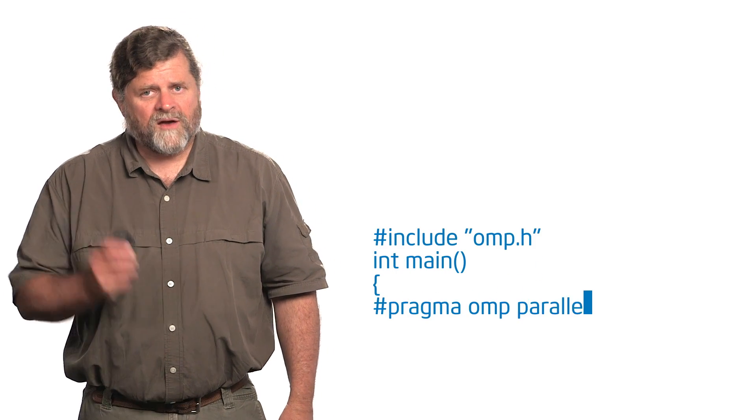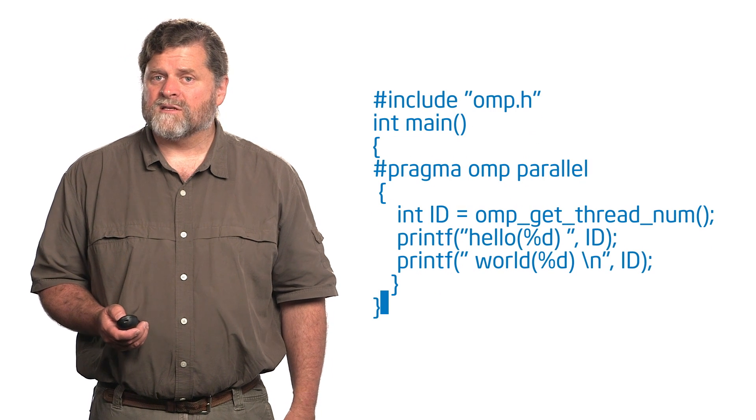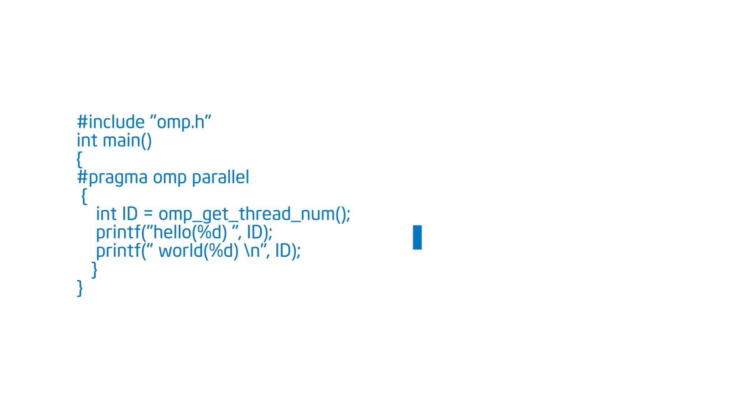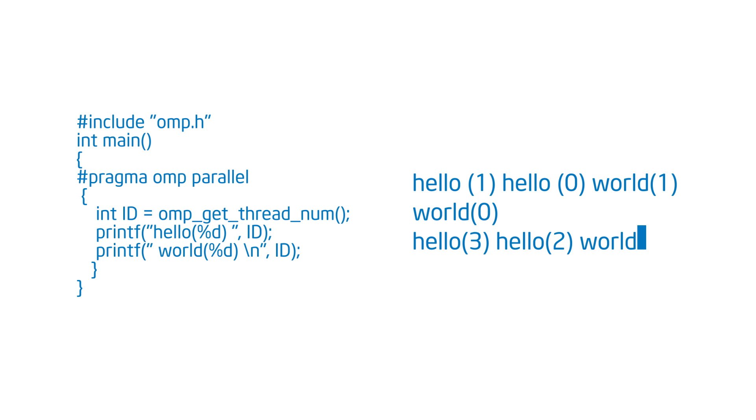Let's look at the Hello World program. With everything I've told you, you should be able to understand the output you saw when you ran this. I ran it on my laptop and got: hello one, hello zero, world one, world zero, hello three, hello two, world three, world two. And each time I run it, they'll be in a different order. The threads are going to be interleaved in time every which way. This is very, very important — you, the programmer, have to make sure that every single way you interleave those threads gives you a correct result. This is the challenge of multi-threaded programming.